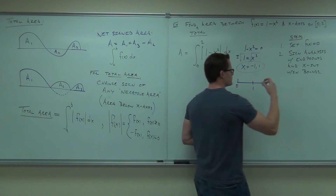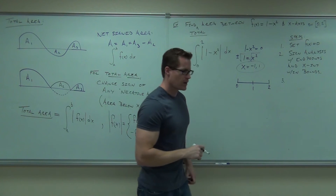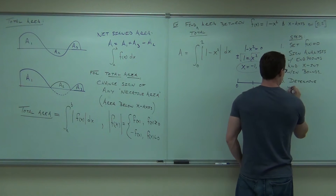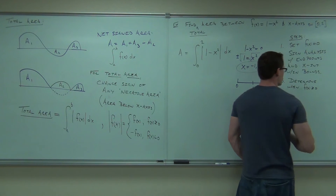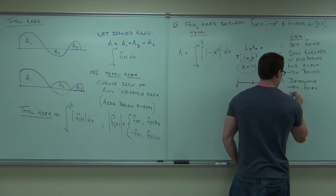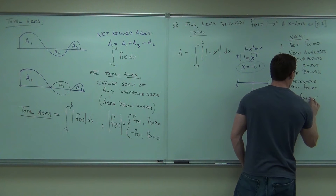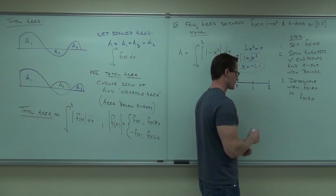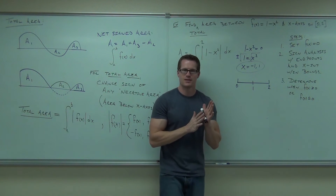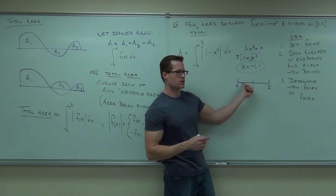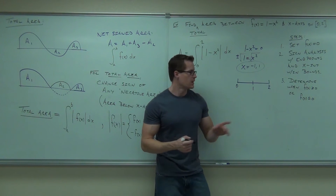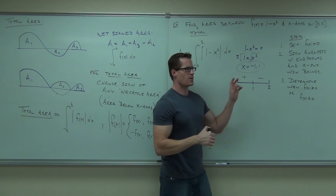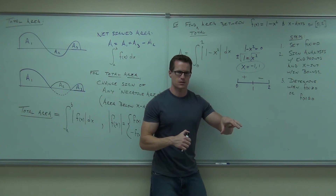Recall that if it's above the x-axis, the area has to be positive. If it's below the x-axis, the area will be negative, and the x-intercept is the separating point between those two areas — that's why we set it equal to zero. So we determine when f(x) is greater than zero — above the x-axis — or less than zero, below the x-axis. Plug in one half: it's positive. So from zero to one, I'm above the x-axis. From one to two, I'm below the x-axis.